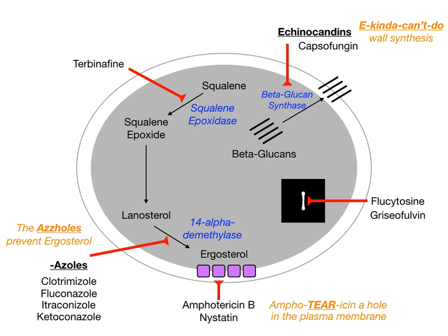You can 'amphotericin' — you tear a hole in the plasma membrane at ergosterol. And the 'asshole' drugs inhibit ergosterol. So those are the mnemonics; you might find them useful.